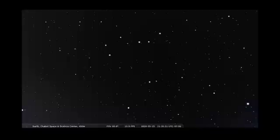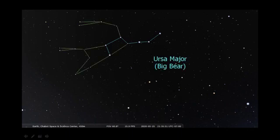The Big Dipper is not a constellation. It's what astronomers call an asterism, which is a pattern of stars that looks like a familiar object. The Big Dipper is made up of a group of stars within the constellation Ursa Major, the Big Bear. Ursa Major is in the northern sky, and when it's well above the horizon, you can easily see the bright stars of the Big Dipper, even in the light-polluted skies over cities.